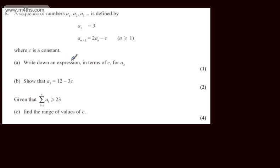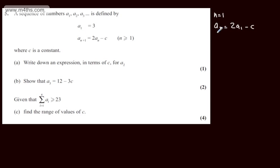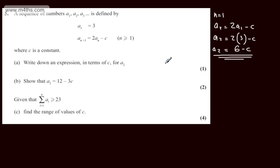In part A, we're asked to write down an expression in terms of c for a_2. The question carries one mark. Considering n = 1, we have a_2 = 2a_1 - c. Since a_1 = 3, we get a_2 = 2(3) - c = 6 - c. So that's our expression for a_2 in terms of c.